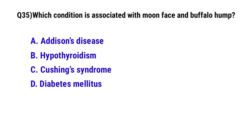Question number 35: Which condition is associated with moon face and a buffalo hump? The correct option is C: Cushing's syndrome.